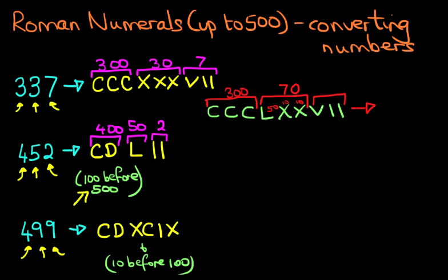And lastly, we've got the units. V, I, I. That's 5, 6, 7. So therefore, the Roman numeral C, C, C, L, X, X, V, I, I is 377.